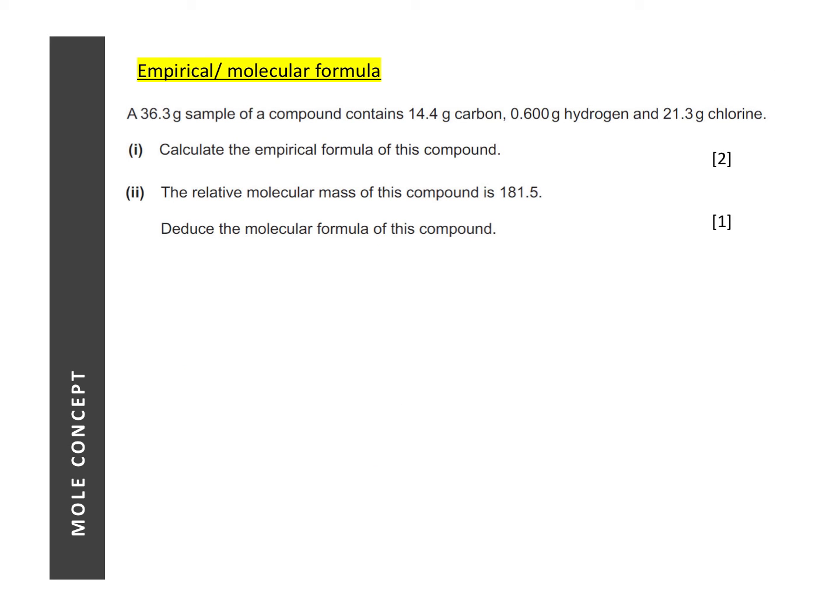Next, we will look at how we can obtain empirical and molecular formula from mass data. Now, there are many ways to solving this question, but the way that I would recommend is to use a table. So the question tells you that this compound contains carbon, hydrogen, and chlorine.